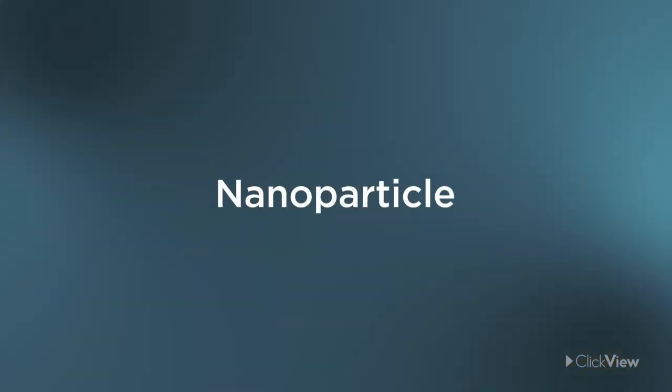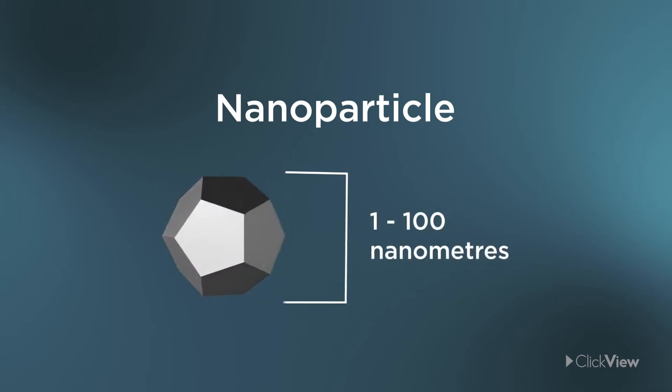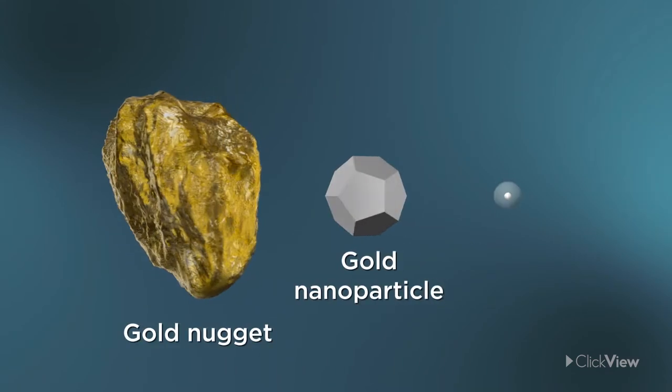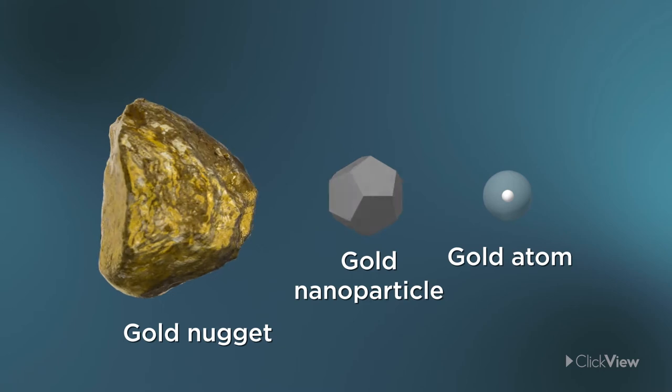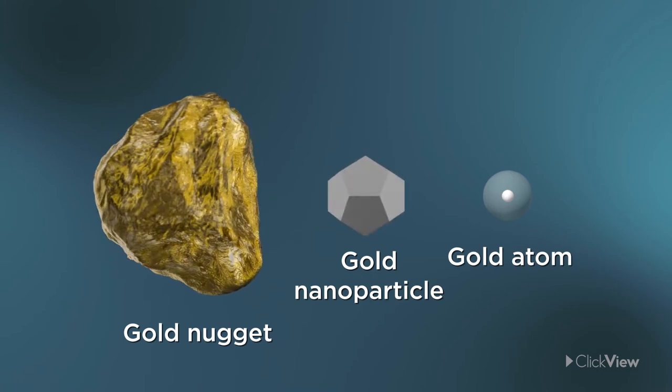We use the word nanoparticle to describe tiny bits of material measuring anywhere between one and a hundred nanometres in diameter. On this scale particles don't behave like the individual atoms they're made from. Nor do they look or act like larger chunks of material.